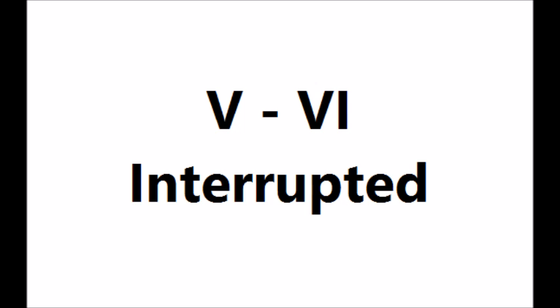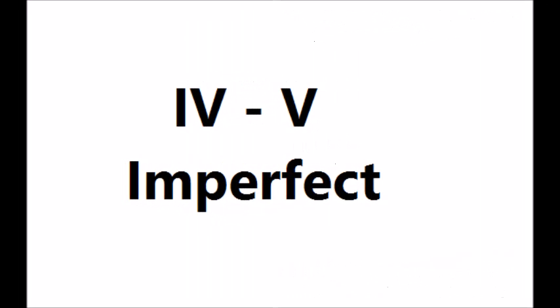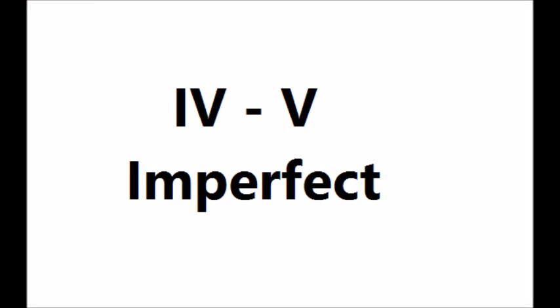The key chord was minor, but the final chord was in a major key. The only permutation ending in chord 6 is 5 to 6. Now let's try this one. Here is your key chord. [plays chords] That was 4 to 5 — an imperfect cadence.